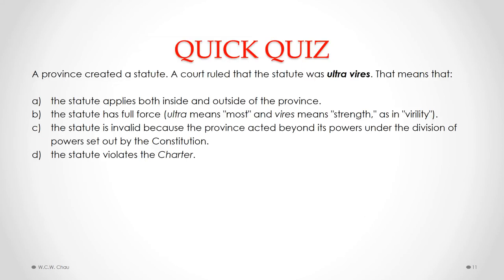Let's now do a quick quiz question. Please pause this video to consider this question, and feel free to go back and look at the previous slide. The answer here is C. The question is: a province created a statute and a court ruled that the statute was ultra vires. That means C — the statute is invalid because the province acted beyond its powers under the division of powers set out by the Constitution.